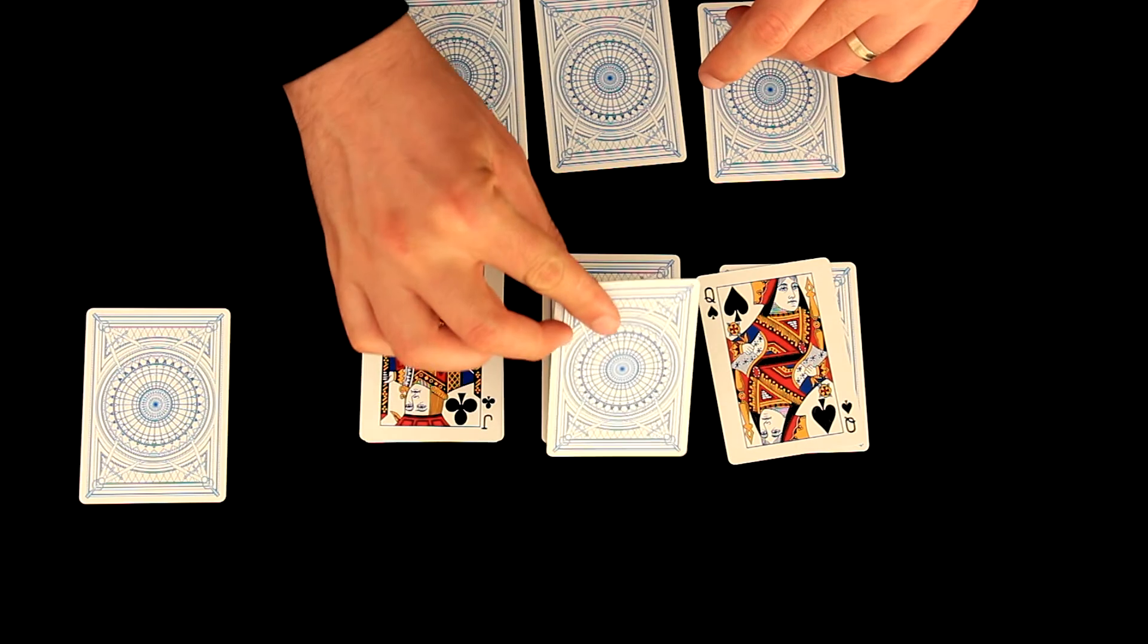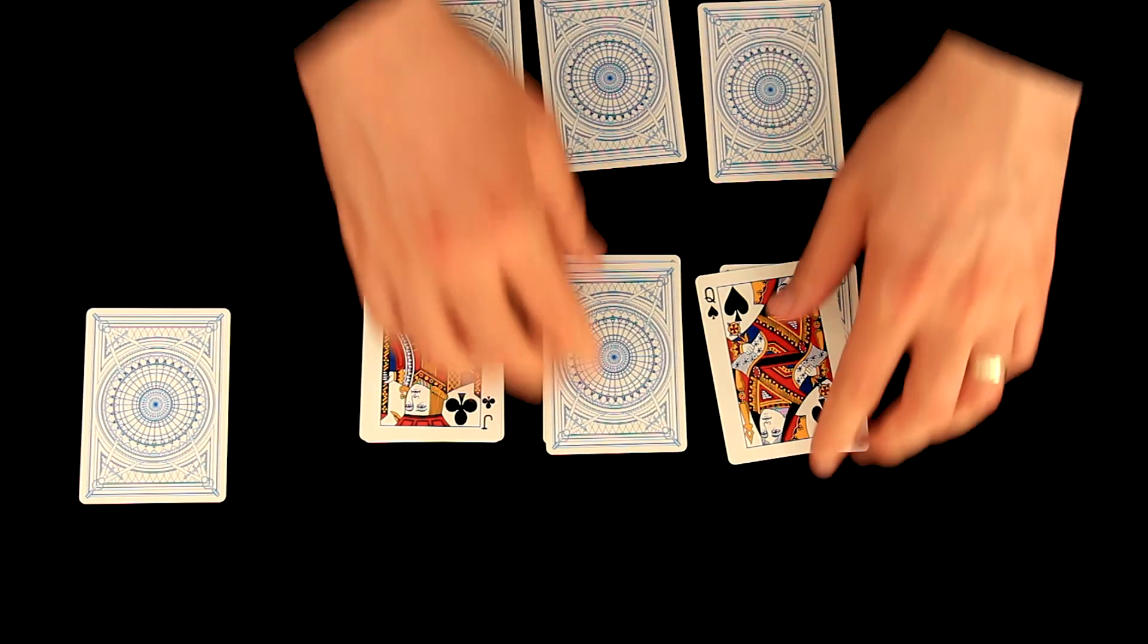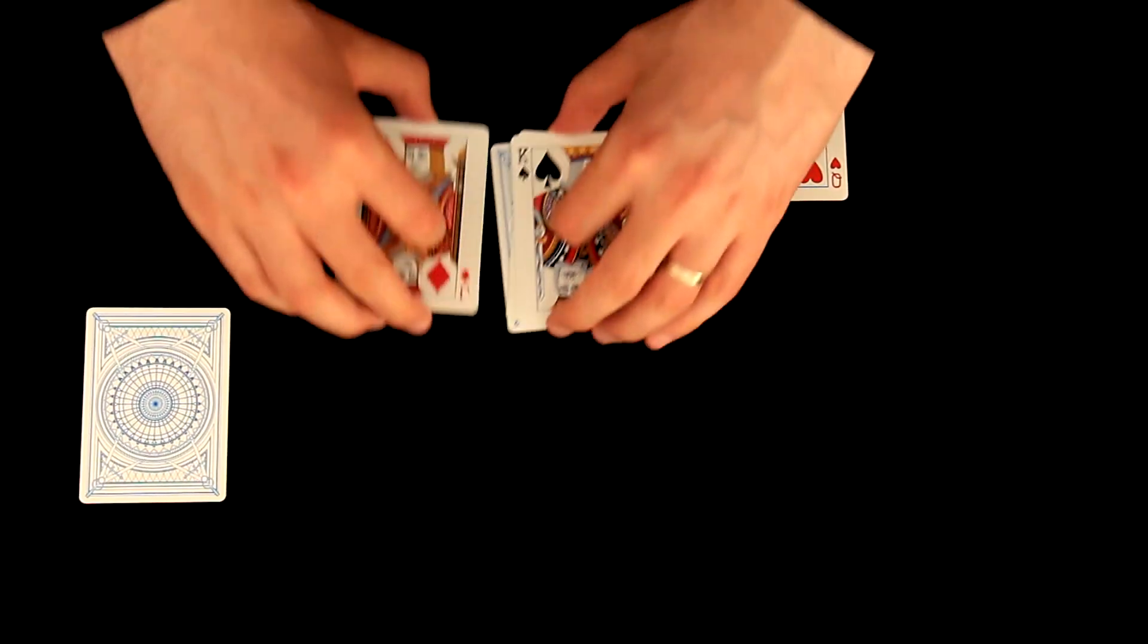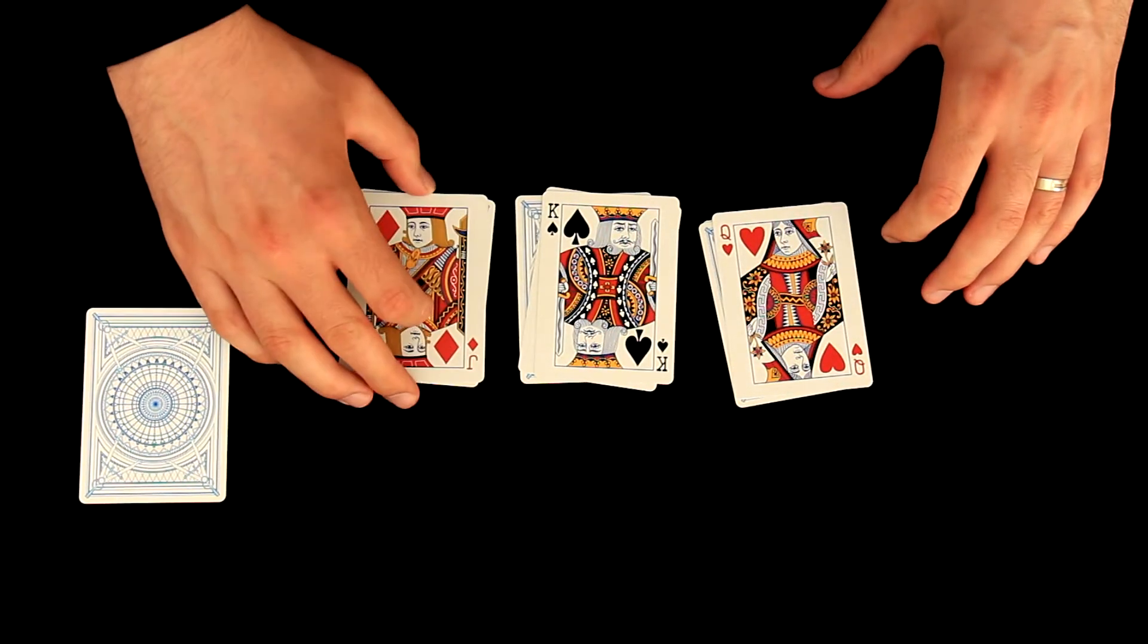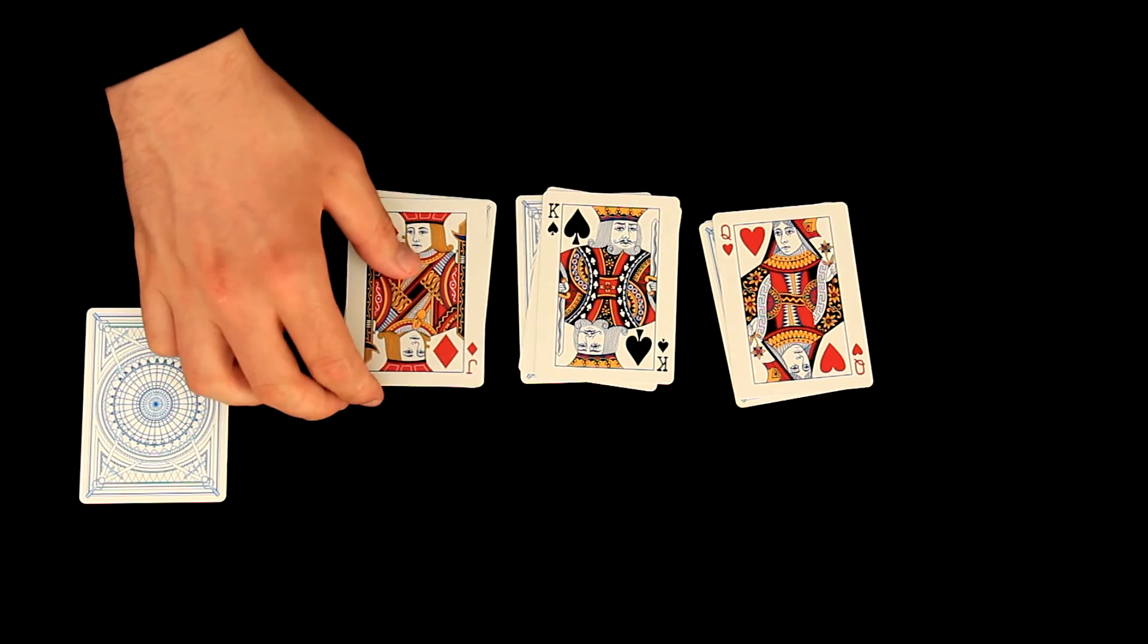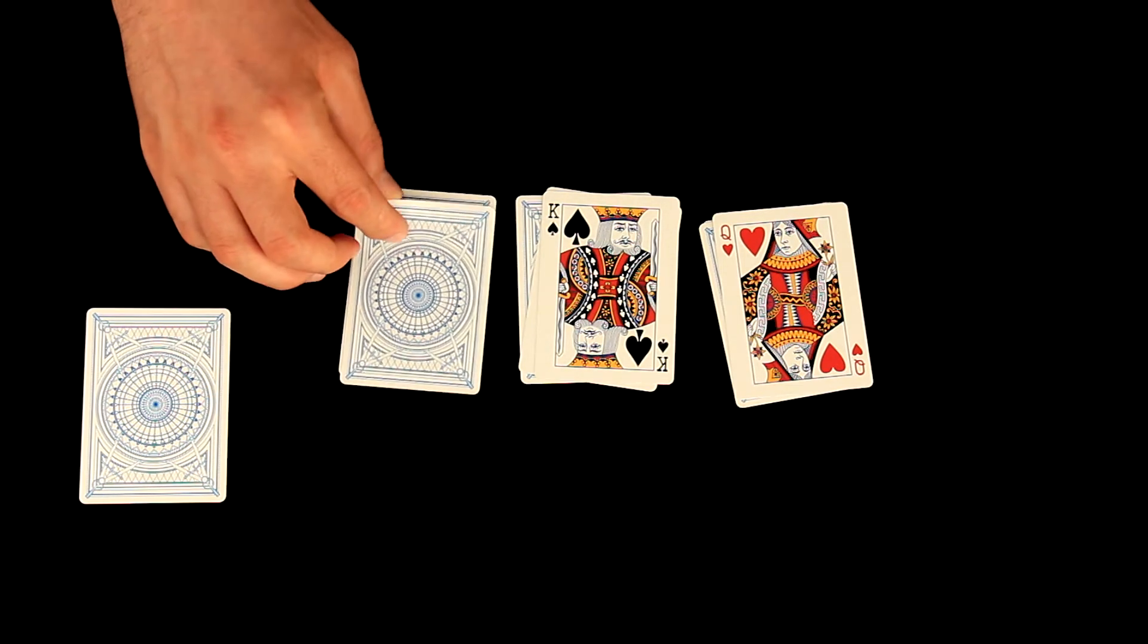So I will turn this card over. Let's continue. We have here again three symbols and as I said before, I don't think you have chosen diamonds, so I will turn this card over.